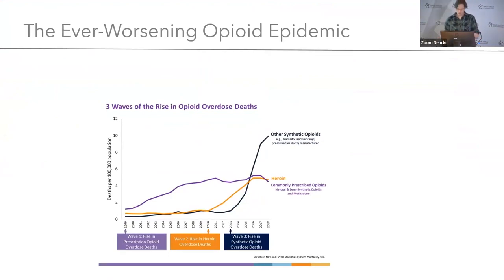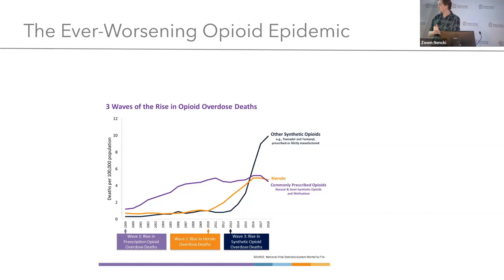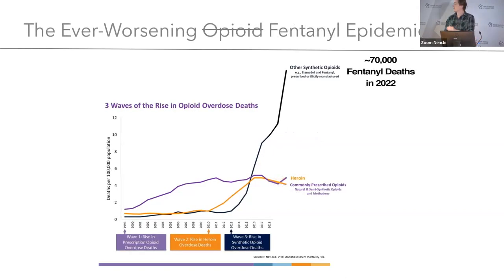For those of you who are not American, in the United States, opioid overdose is a serious public health concern. It's often described in three phases: an increase in prescription opioid use, then an increase in heroin, and finally an increase in synthetic opioid use. But this is a really out-of-date figure. Since the pandemic, there's been one drug that's taken over the market, and that's fentanyl. And so there's a lot of interest in improving treatments for fentanyl.